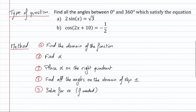The method we're using has five steps. The first is to find the domain of the function. The second step is to find alpha, depending on what your function is equal to. Then we place alpha on the right quadrant, find the angle on the domain found in step one, and then solve for x if needed.